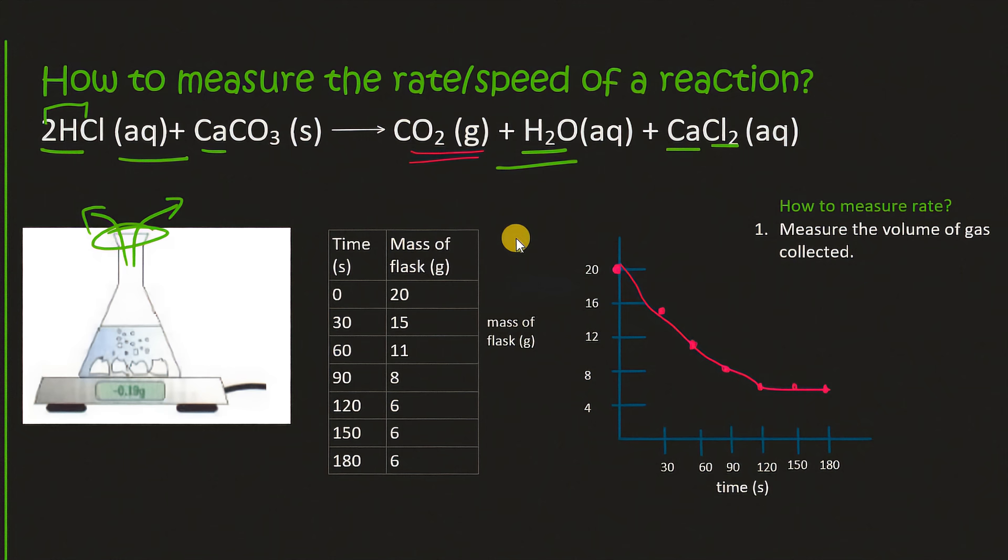This makes sense because the mass of the flask is going to decrease whereas the volume of gas that you're going to produce that would increase. Another thing we can see is that at the end the graph becomes flat and that is because the reaction is finished. That is because one of your reactants either the HCl or this calcium carbonate is complete. Remember we have a limiting reactant.